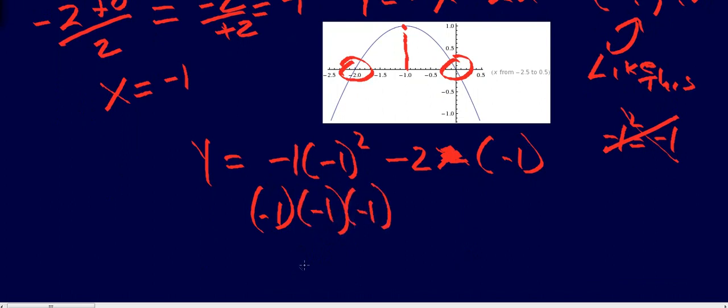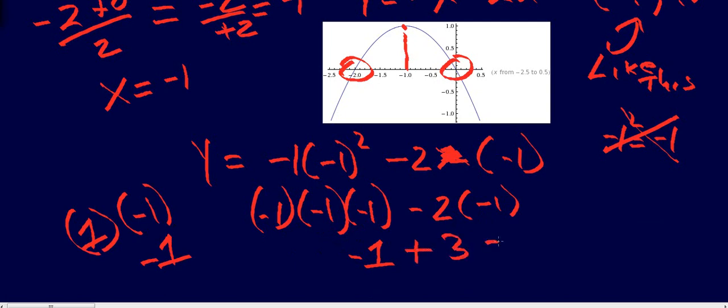You've got a negative 1 times a negative 1 times a negative 1. There's an understood negative 1 here. Minus 2 times negative 1. So this is going to be a negative 1 because a negative times a negative is a positive. A positive 1 times negative 1 is a negative 1. Negative 2 times negative 2 is a positive 3.